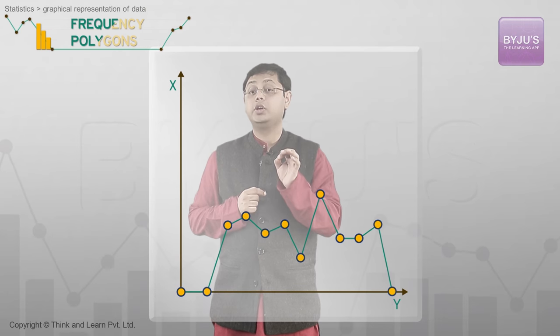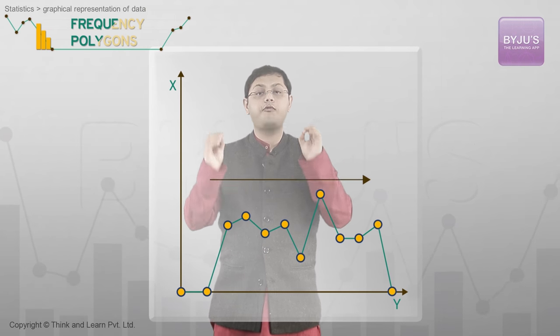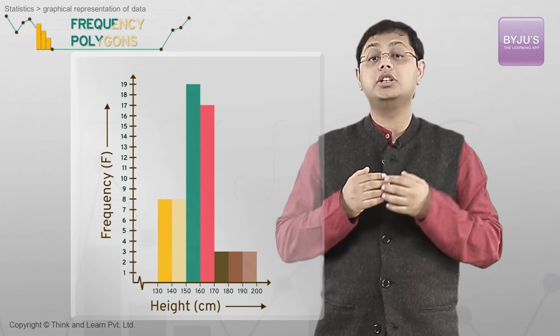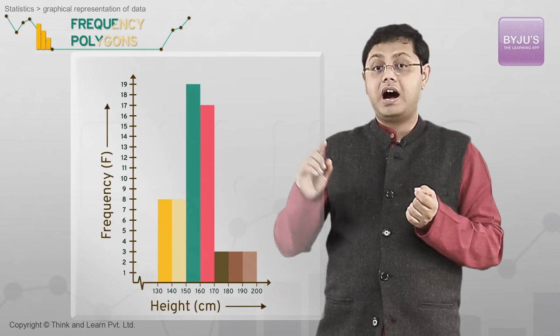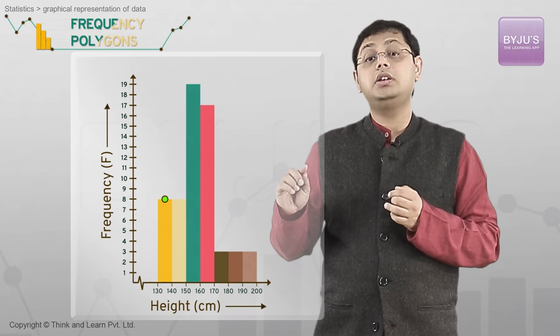There is yet another visual way of representing quantitative data and its frequency. It's called the frequency polygon. Let's consider the histogram that we initially constructed with equal class intervals. Let me mark this point which is the midpoint of the class interval of 130 to 140.